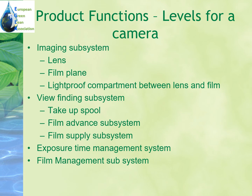Here is a way to look at product functions using a professional camera as an example — a non-digital camera that professionals still use to take high-level photos. In the matching subsystem there is a lens, a film plane, and a light-proof compartment between the lens and the film. In the film-handling subsystem there is a take-up spool, film-advance subsystem, film-supply subsystem, and so on. With different products and customers, there might be different needs we have to take into account.